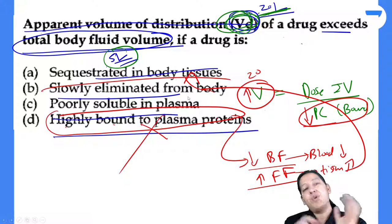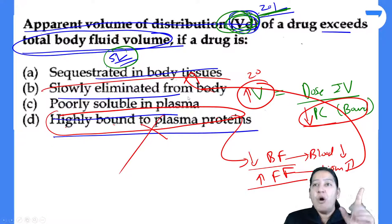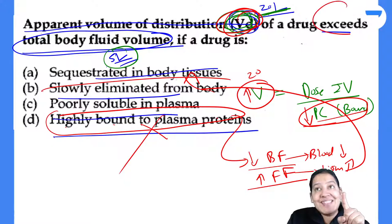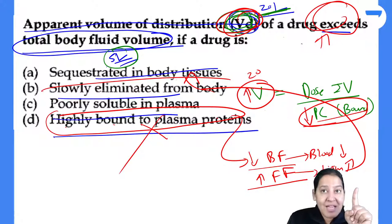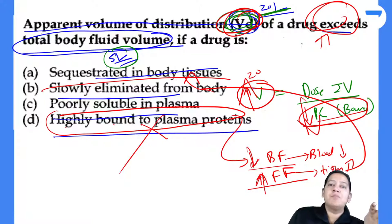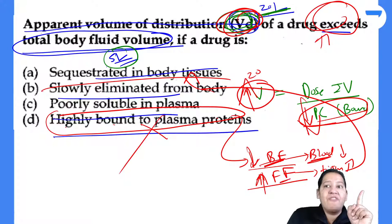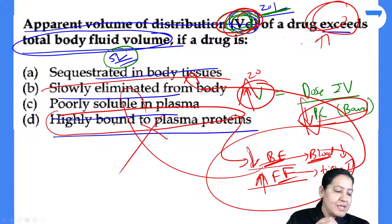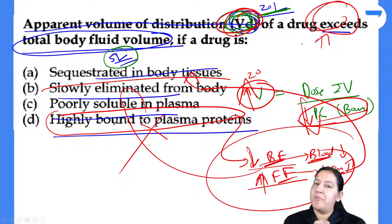Apply the two formulas: volume of distribution is inversely proportional to bound form and directly proportional to free form. Bound form is in blood, free form is in tissue. Apply this for any question and you can solve it. If you give me a thumbs up and appreciate the effort, I will continue.